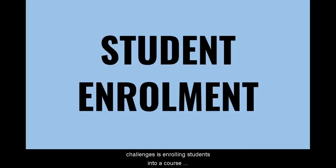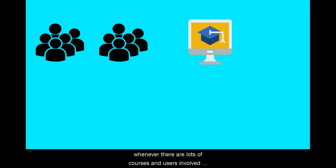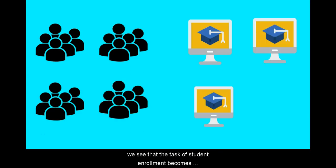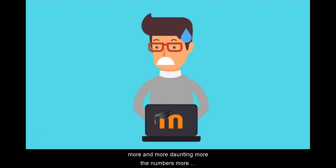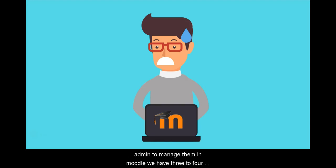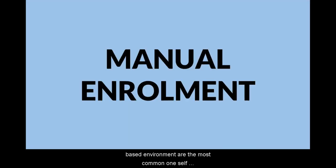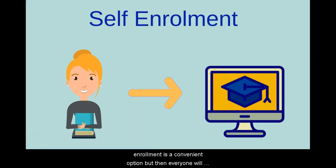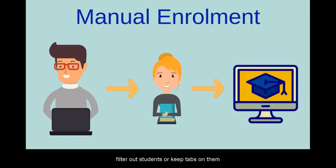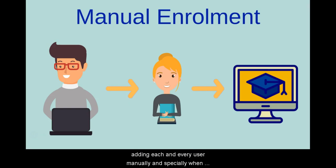One of the challenges is enrolling students into a course. Whenever there are lots of courses and users involved, the task of student enrollment becomes more and more daunting. More the numbers, more difficult it is for the admin to manage them. In Moodle, we have 3-4 ways of enrolling a user. Self-enrollment and email-based enrollment are the most common ones. Self-enrollment is a convenient option, but then everyone will have access to your course and you will not be able to filter out students or keep tabs on them. And as an admin, it can get hectic adding each and every user manually, especially when the number of courses and users is huge.